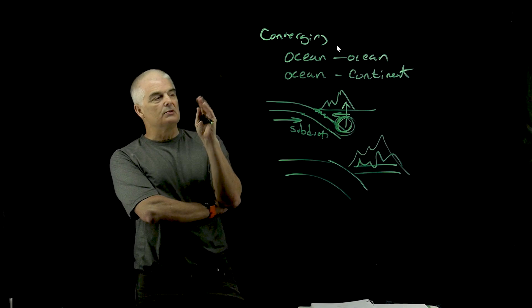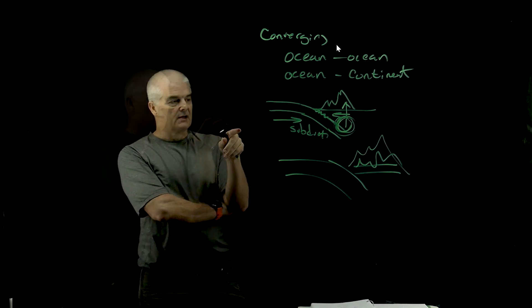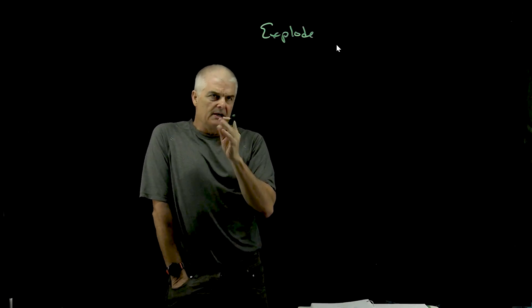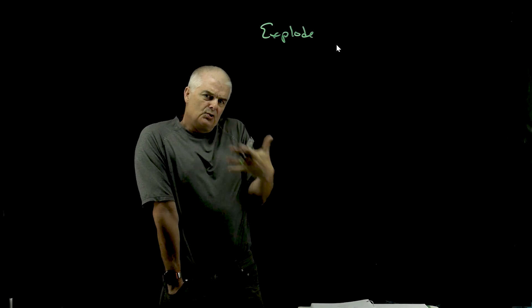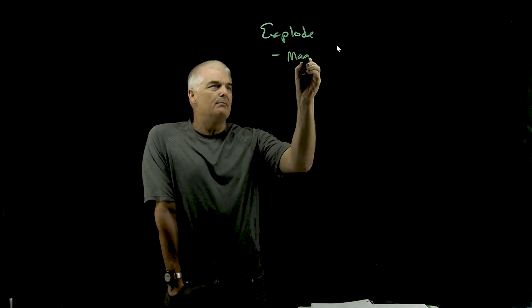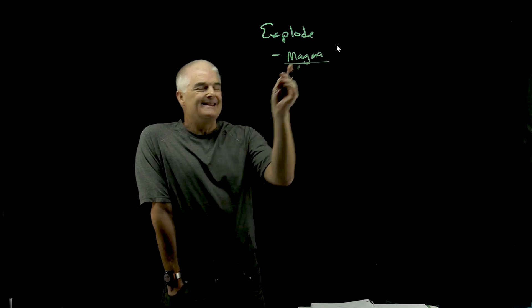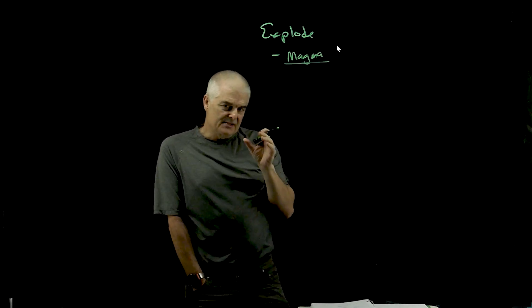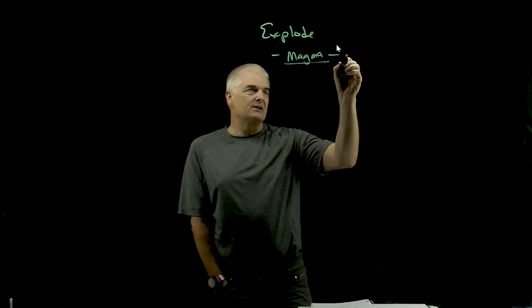So why do they explode? A couple of key factors that cause a composite volcano to not ooze out but to explode. Number one, it's the content of the magma. The magma is thicker. It has a higher silica content. It's thicker, or we could say it's more viscous.